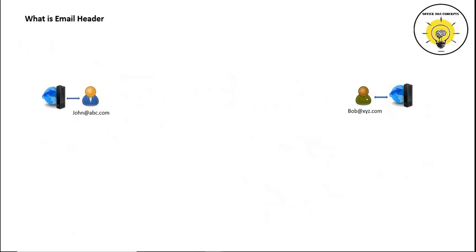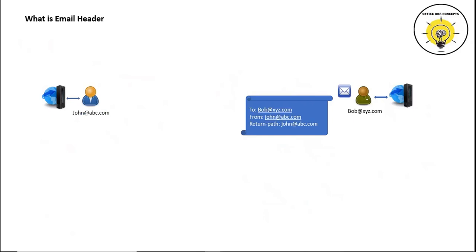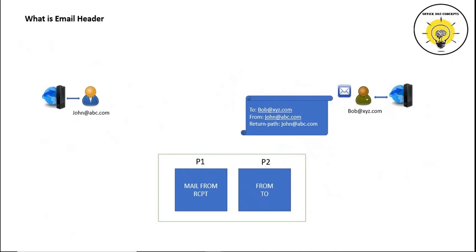If John wants to send an email to Bob, John will compose an email and type Bob@xyz.com into the 'To' field and send that email. If we analyze this email header, we will see a few values: To, From, and Return-Path. An email header is divided into P1 header and P2 header. P1 header includes the 'Mail From' and recipient address; P2 header includes the 'From' and 'To' address.